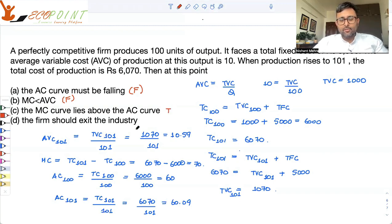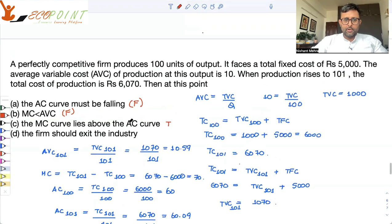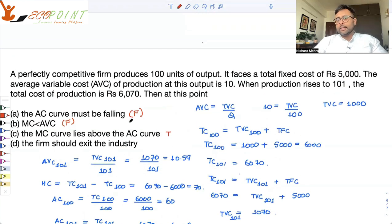Firm should exit the industry. I think for this particular point, you need to know about the prices. So if price is greater than the average cost, then the entry is going to happen. If price is less than average cost, then the profits are going to be negative and the exit is going to be there. But there is nothing which has been told about the prices. So we can't say about it. So this I'll take as false. So I'll go with C. MC curve lies above AC curve.